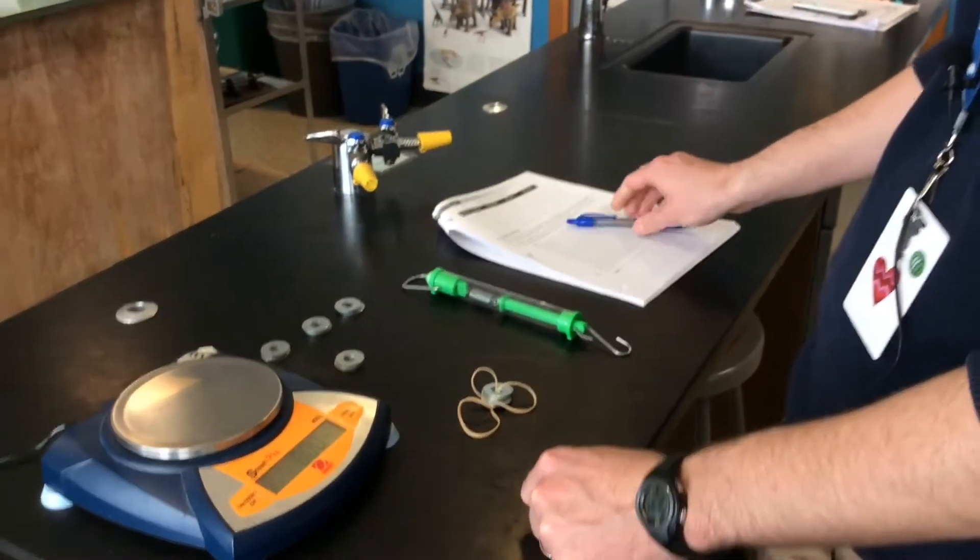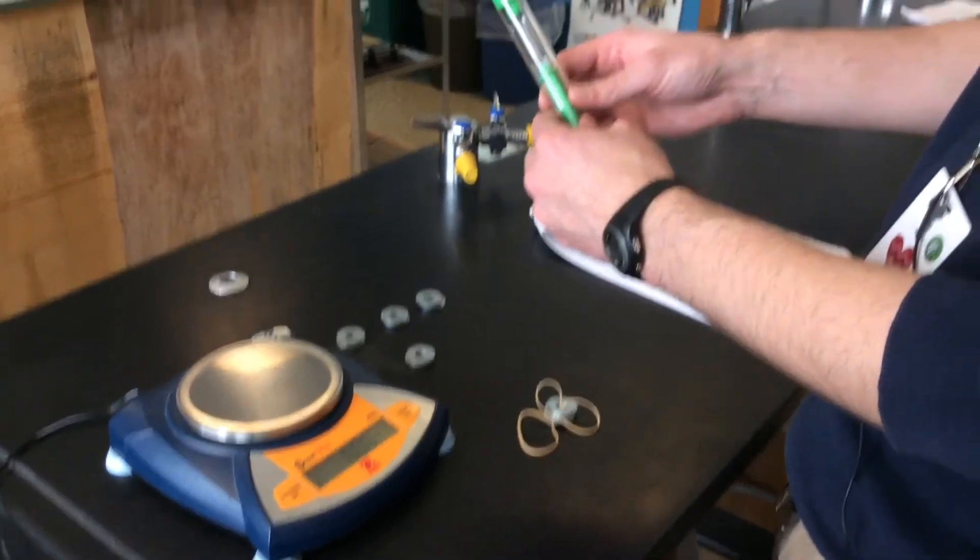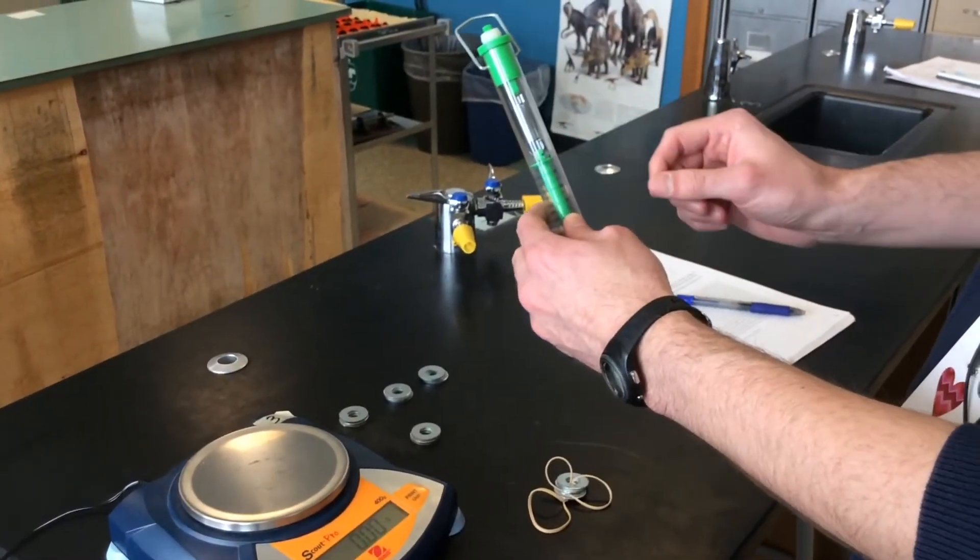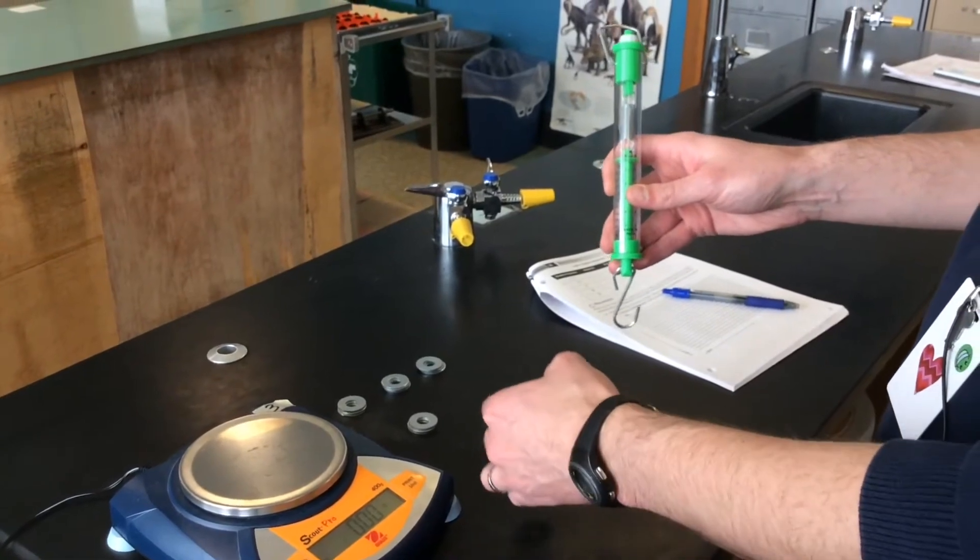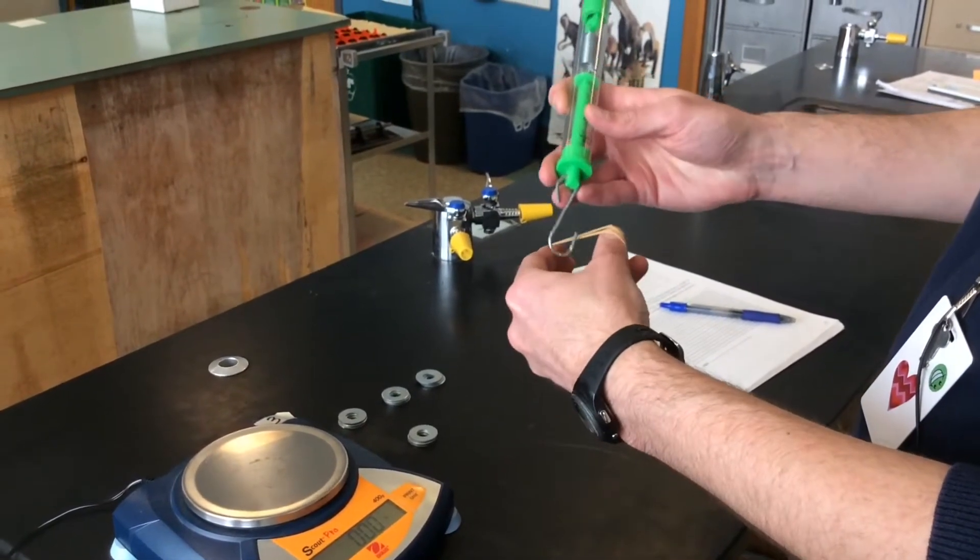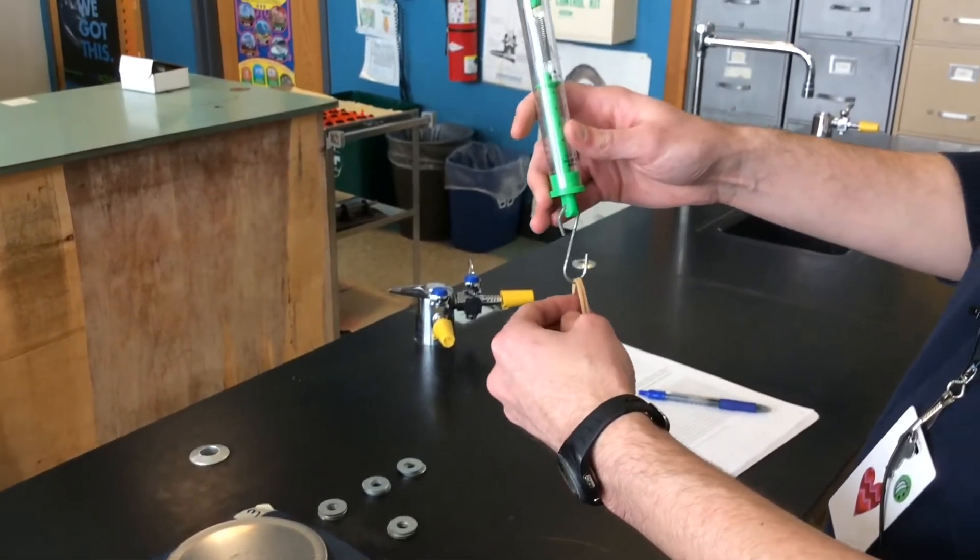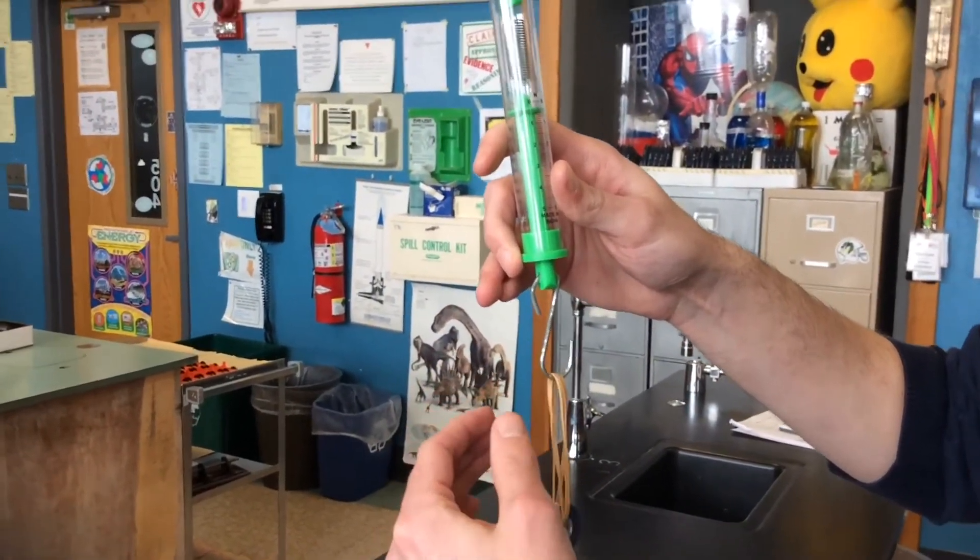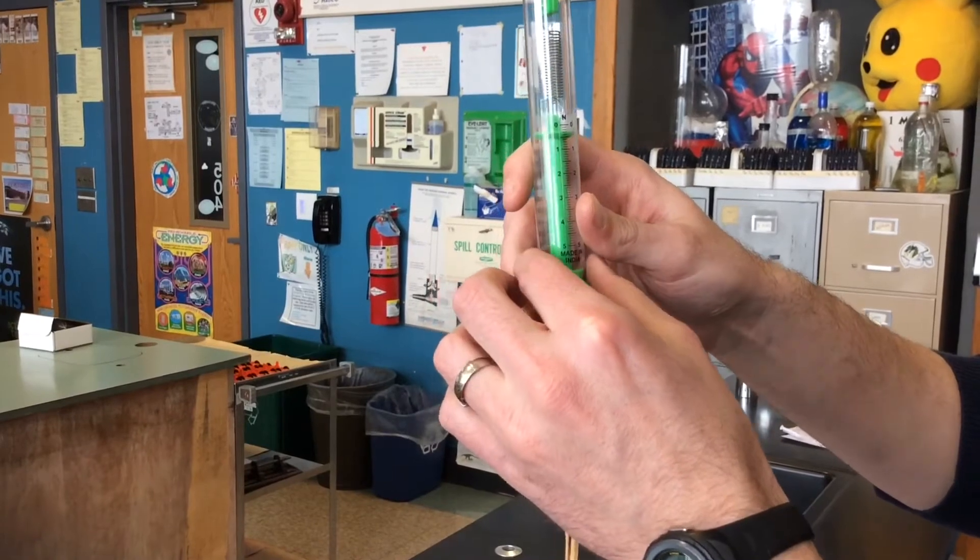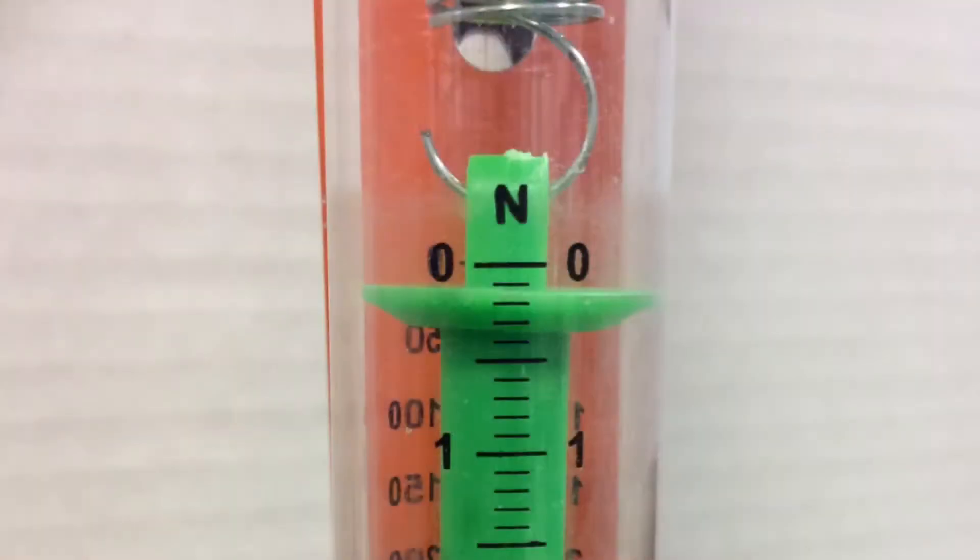So for each one, and I showed you in the previous video how to calibrate your spring scale, set it to zero, we're going to take the weight and also the mass of each of these. So I have it zeroed, I hang the mass on it, and now you're going to read that. Each line is worth a tenth of a Newton.